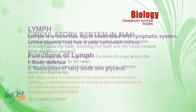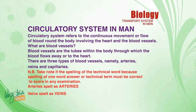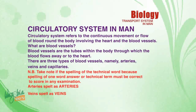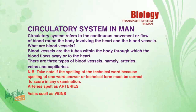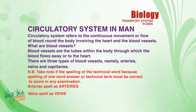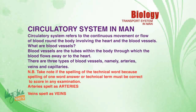Now let's discuss the circulatory system in man. The circulatory system refers to the continuous movement or flow of blood around the body, involving the heart and the blood vessels. Blood vessels are the tubes within the body through which blood flows away from or to the heart.